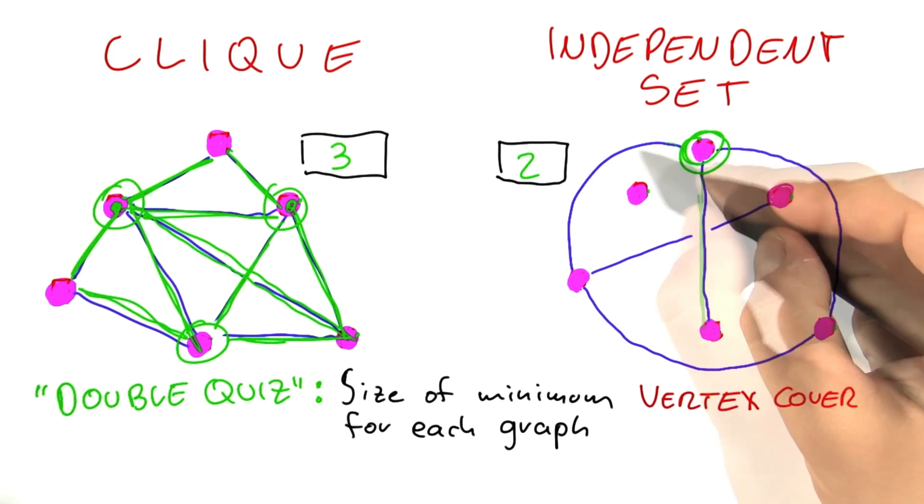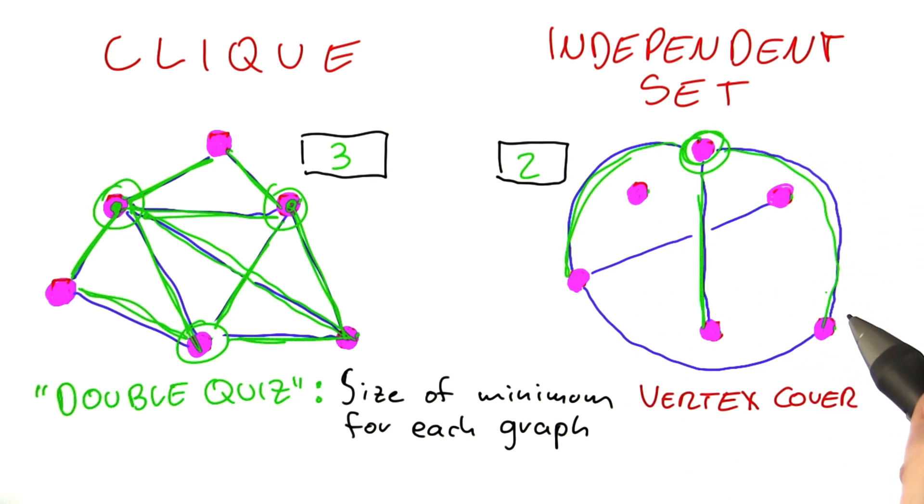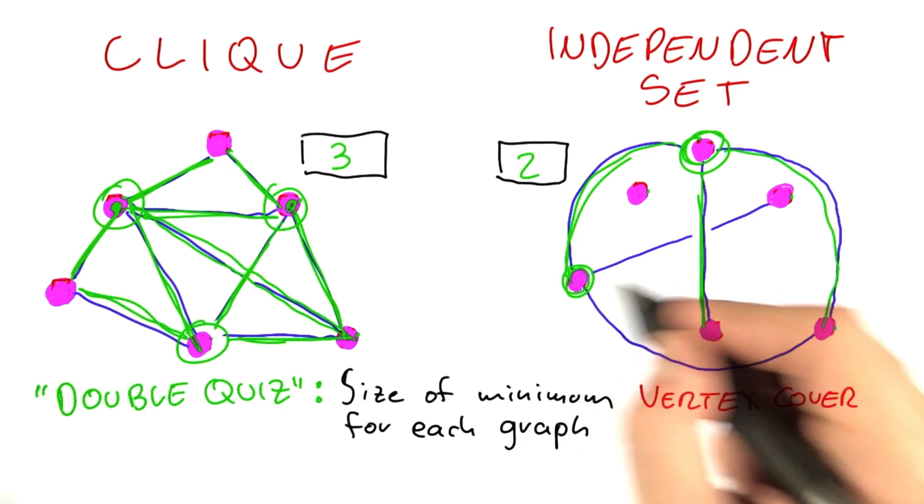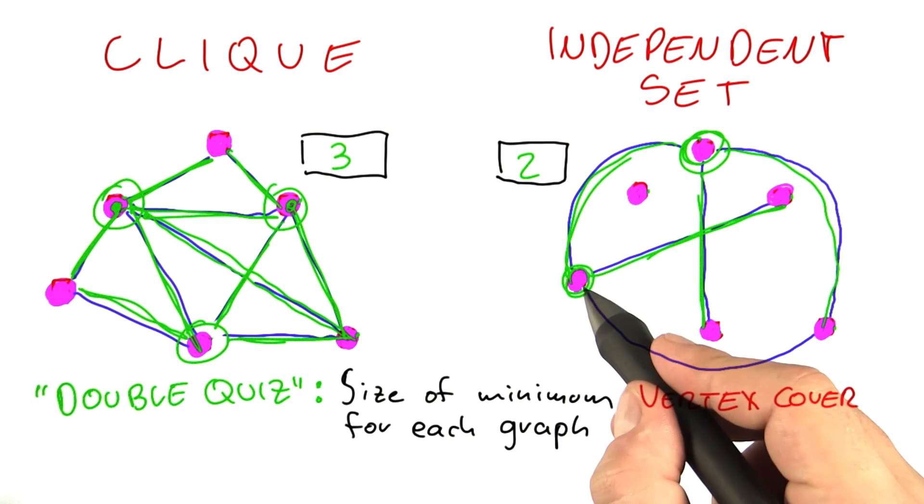We can select this one here, covers all of those edges. And we can select, for example, this one here. Or not only for example, because this is actually the only possible smallest solution.